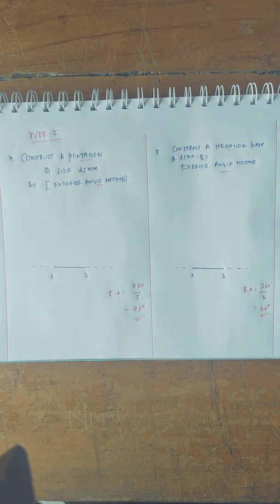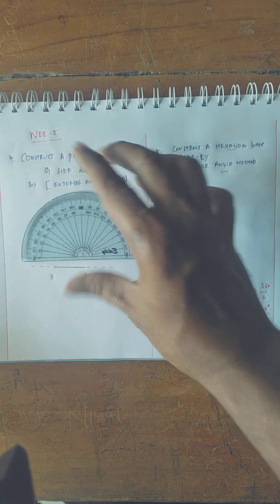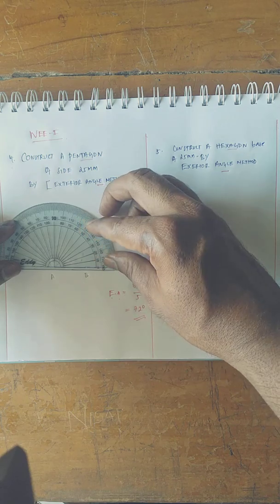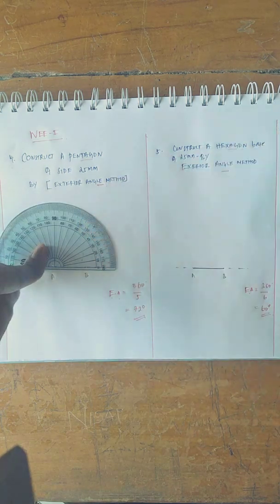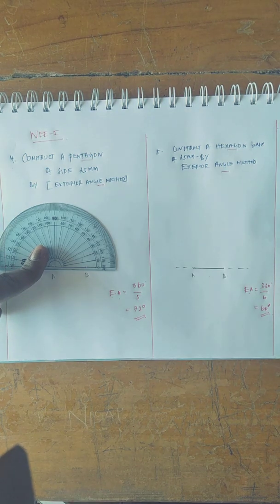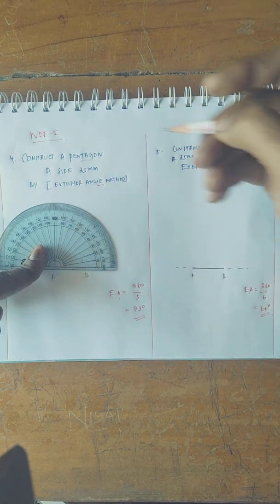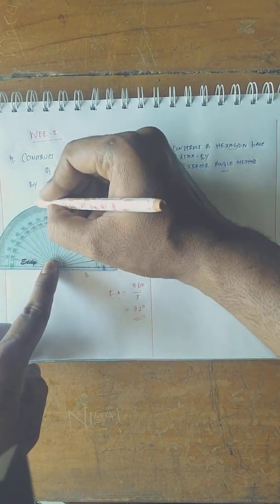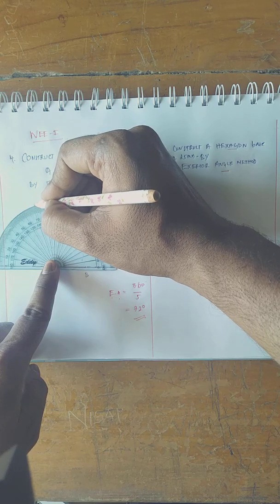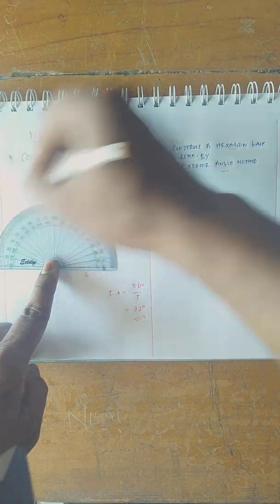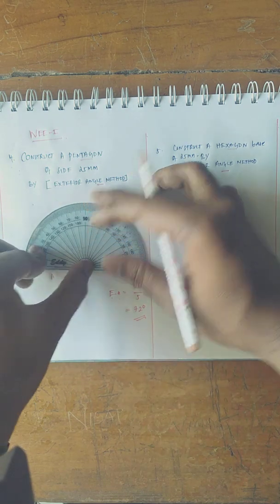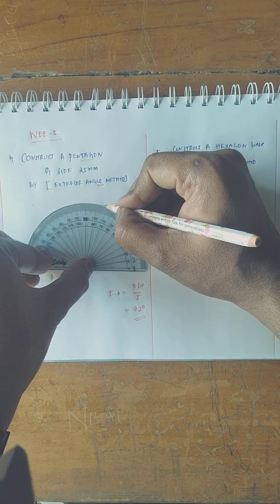So initially I am drawing two lines as a base that could be the base of the pentagon and hexagon. Let me make an angular line that is supposed to be 72 degrees for a pentagon, and similarly on this side it must be 72 degrees.